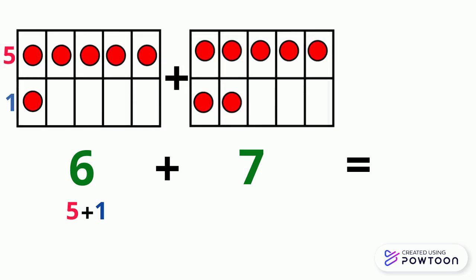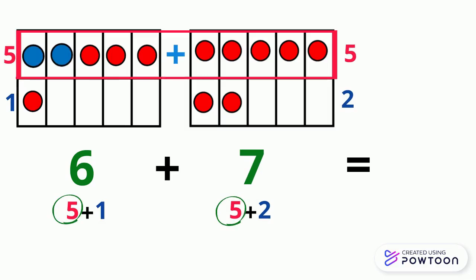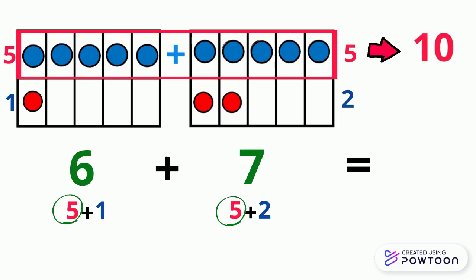The number 6 equals 5 plus 1, and the number 7 equals 5 plus 2. We will start adding 5 with 5. We know that 5 plus 5 equals 10.